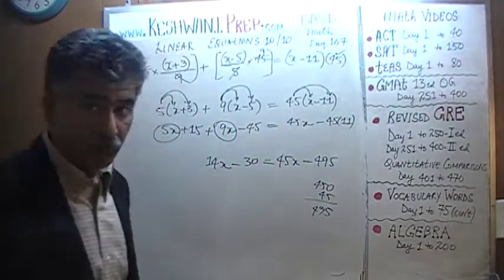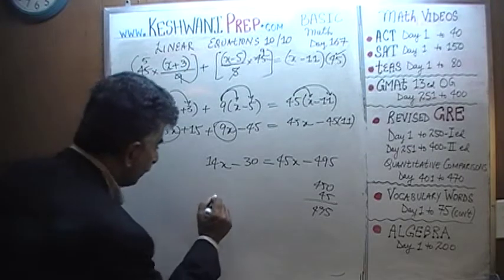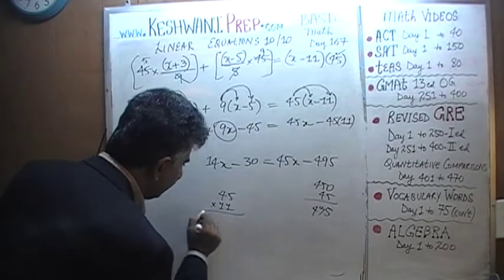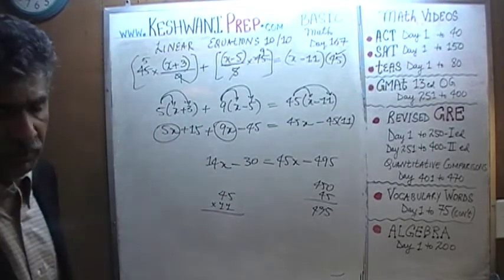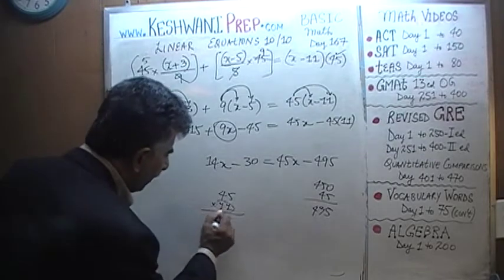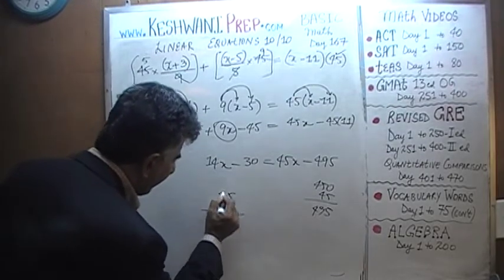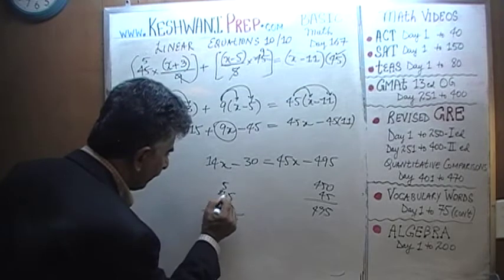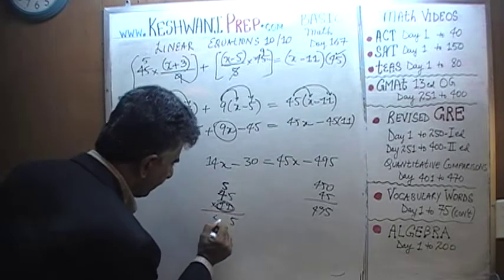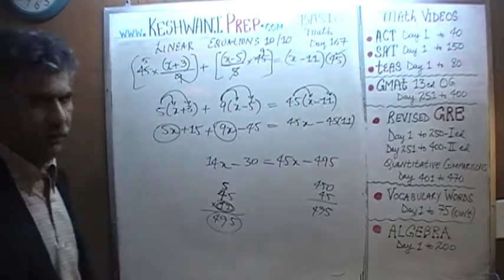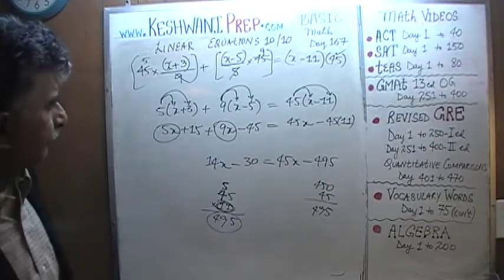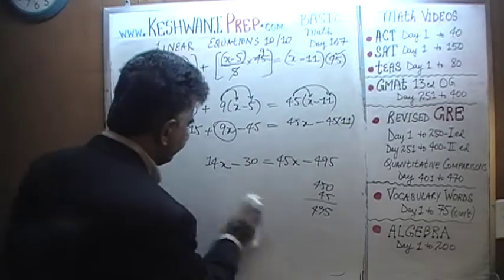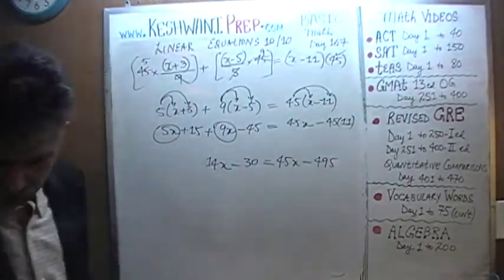That was one way of doing it. Another way is to just do it out. 45 times 11. But don't do it out like a baby. Do it out together. 11 times 5 is 55, 5 carry 5. 11 times 4 is 44, 44 plus 5 is 49. Voila. Either way it only takes 2 seconds. So it's 495.